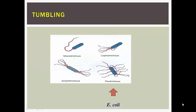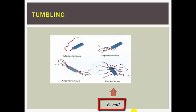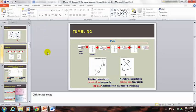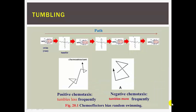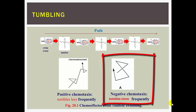Tumbling is a characteristic feature of the motility and chemotactic response of peritrichously flagellated bacteria — microorganisms having a uniform distribution of flagella over their surface. E. coli is an example of a peritrichously flagellated bacterium. Tumbling occurs in both positive and negative chemotaxis; however, cells tumble less frequently during positive chemotaxis and more frequently during negative chemotaxis.